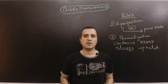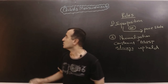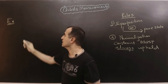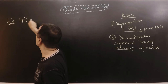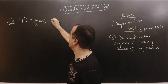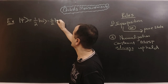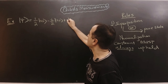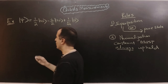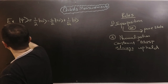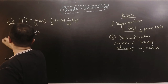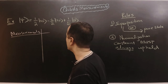I will explain full and partial measurement using some examples. In example number one, I have given a two-qubit register: ket psi equals one over two times ket zero-zero, minus iota over two times ket one-zero, plus one over square root of two times ket one-one. I have to find all the possible full measurements of this register and the probability of each measurement.